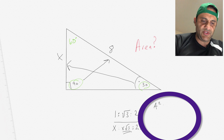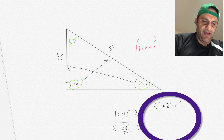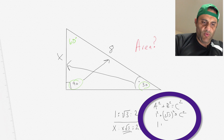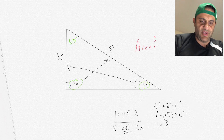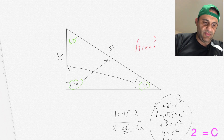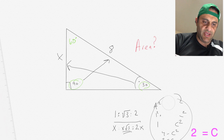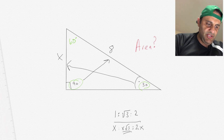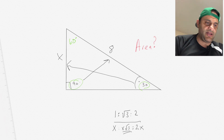This makes sense when you check it with the Pythagorean theorem: A squared plus B squared equals C squared. If you have 1 squared plus square root of 3 squared, that's 1 plus 3 equals 4, so C squared equals 4 and C equals 2. That's why the ratio works. We don't need that right now, but it's good to know.